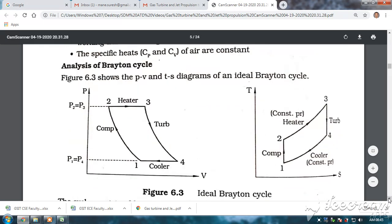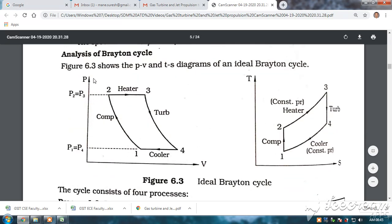Now, let us look at the PV and TS diagram. Please see here, this is the PV diagram and this is the TS diagram of the Brayton cycle. One to two, the compressor it is compressed first. You have seen the pressure increases, volume decreases.